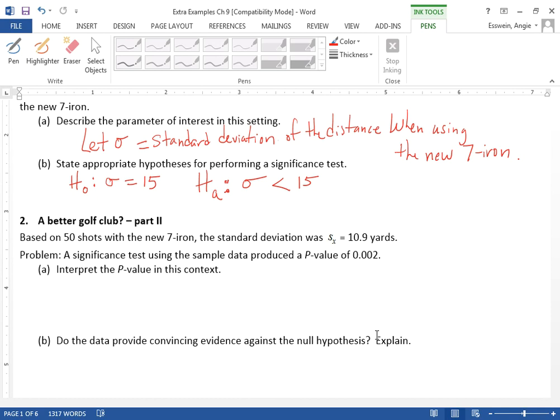Because if we assumed that it was 15, there's so little likelihood that we would actually get a standard deviation of 10.9 yards that we reject the null hypothesis and conclude that the standard deviation is less than 15, because the probability would be so low.